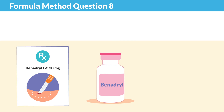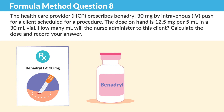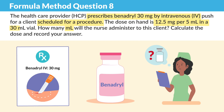Moving on to question eight: the HCP prescribes Benadryl 30 milligrams via IV push for a client scheduled for a procedure. The dose on hand is 12.5 milligrams per five milliliters in a 30 ml vial. So how many ml's will the nurse administer to this client?